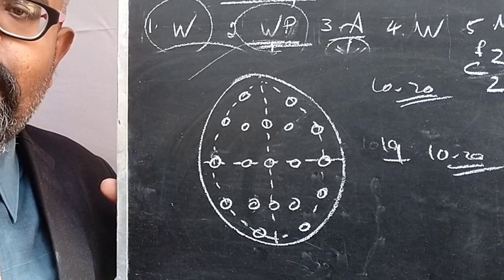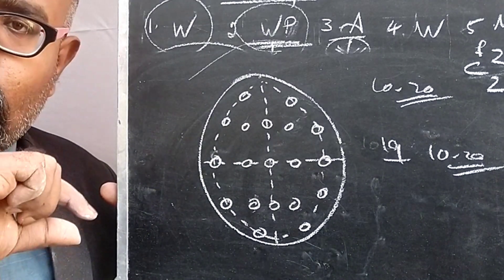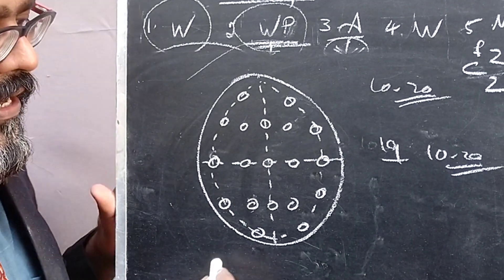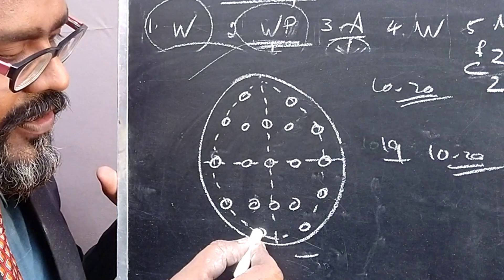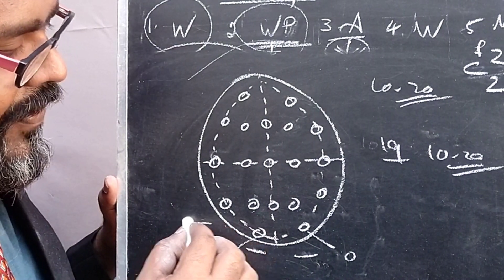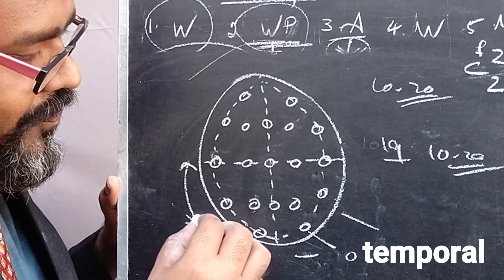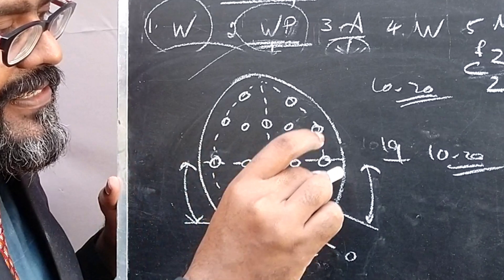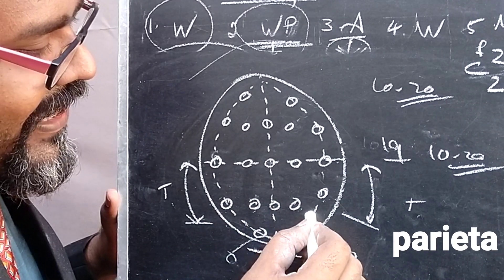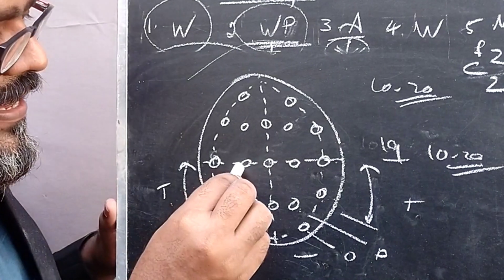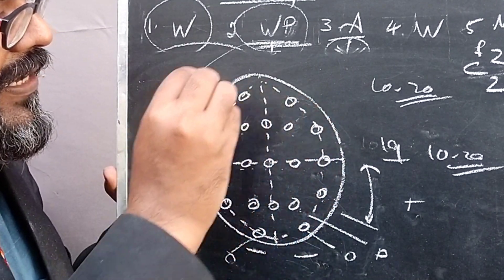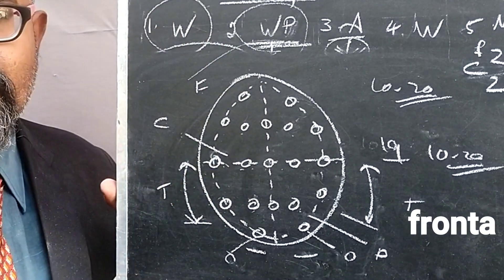According to the lobes of the brain — frontal, parietal, occipital, temporal, and central — the electrodes are named based on their placement. The two electrodes in the occipital region are marked as occipital lobe electrodes. The electrodes in the temporal region are considered temporal lobe electrodes. Three electrodes are considered parietal lobe, three are central lobe, and everything above the central line is considered the frontal lobe.